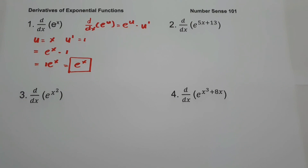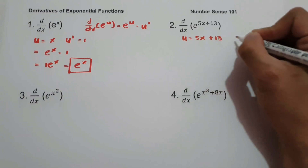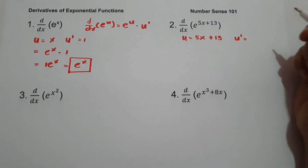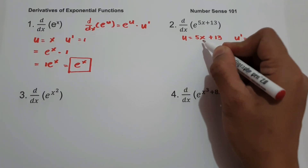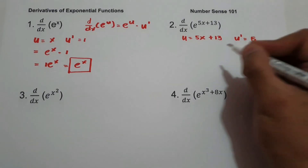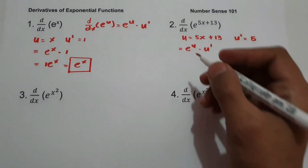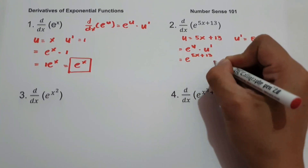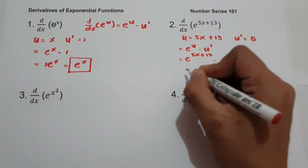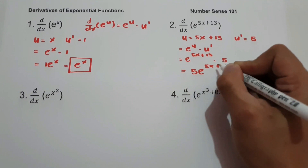On number 2, what is the derivative of e raised to 5x plus 13? Let us identify the value of u, that is 5x plus 13. And u prime, the derivative of 5x plus 13: the derivative of 13 is 0 and the derivative of 5x is 5. So we have e raised to u multiplied by u prime, giving us e raised to 5x plus 13 multiplied by 5. Our final answer is 5e raised to 5x plus 13.